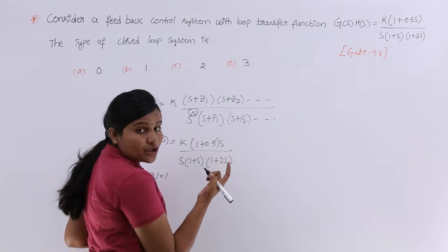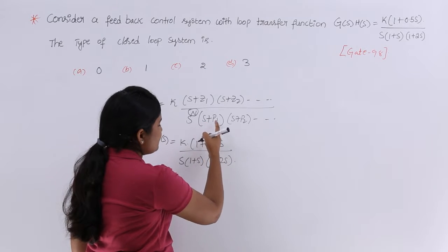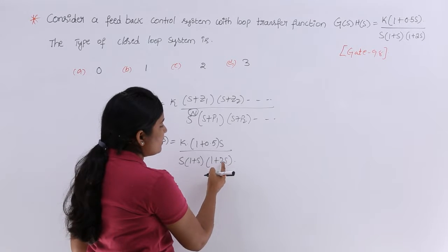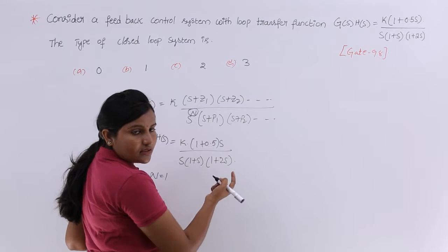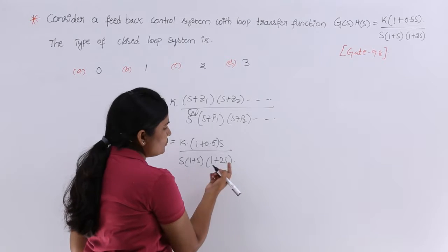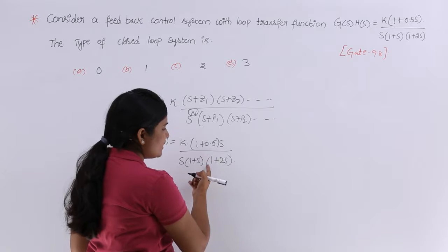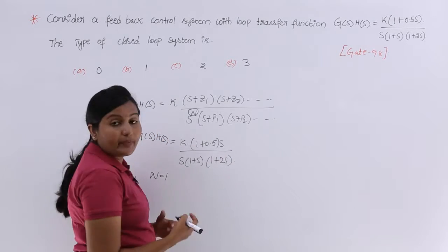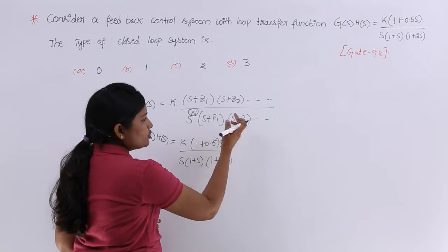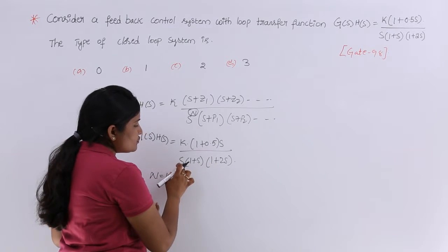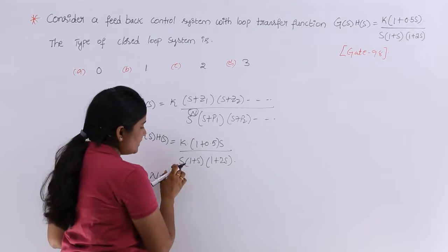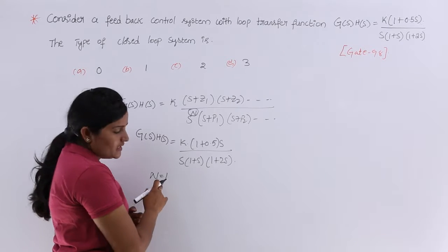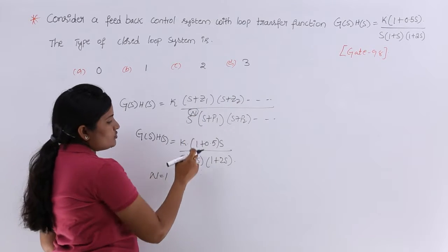You might have a doubt that this is not in the (s+p1) form. If you just rearrange it, you will get the (s+p1) form. If you take the common factor of s, you will get that form. There is no need to expand (1+2s) — by equating it to zero you will get the p2 value. Whether you have 2s or 3s, you only need to look at the s term. Here, the power of s is 1, meaning n equals 1.